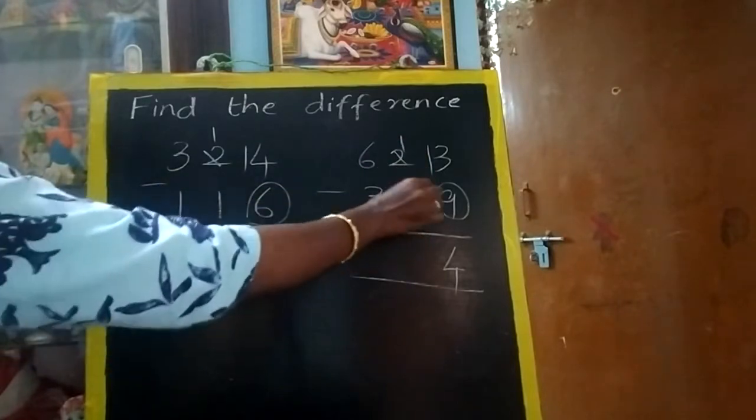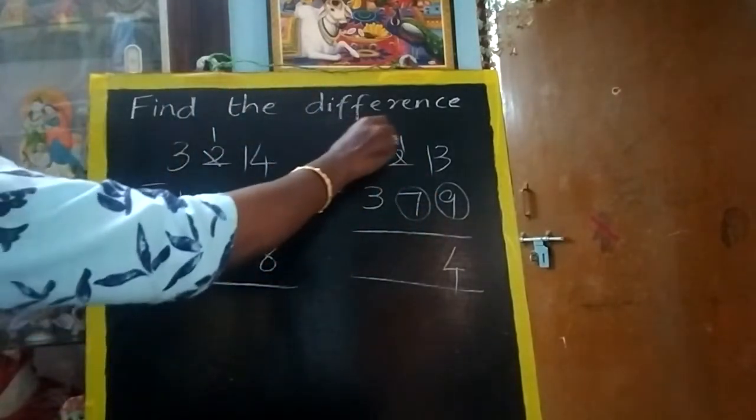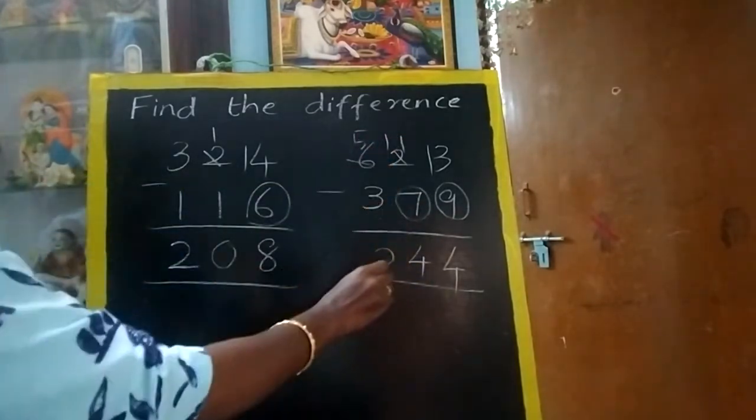Now again you have to use the circle. The circle is down. Should we borrow? Yes, we have to borrow. 11 minus 7 equals 4. 5 minus 3 equals 2. So like this you have to do.